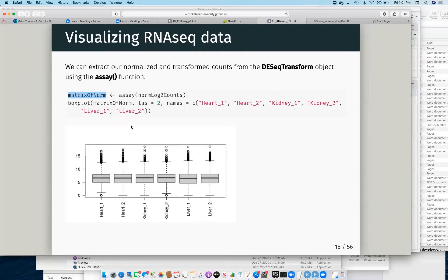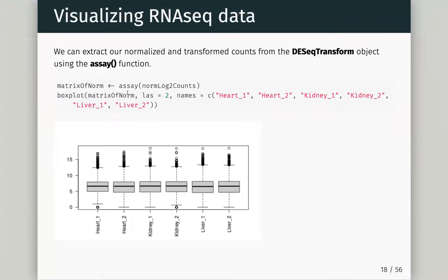In this case, what we want to do is check the normalization, and we can quickly do a box plot from base R — we'll take our matrix of normalized values, tell it to orientate the labels sideways, and give it the names we want to plot. Now I have my box plot and we can see that the distribution of normalized counts looks pretty good. Maybe this one sticks out a little bit and looks different.